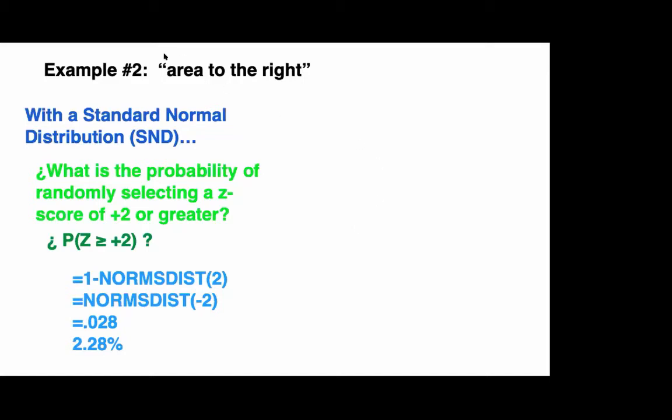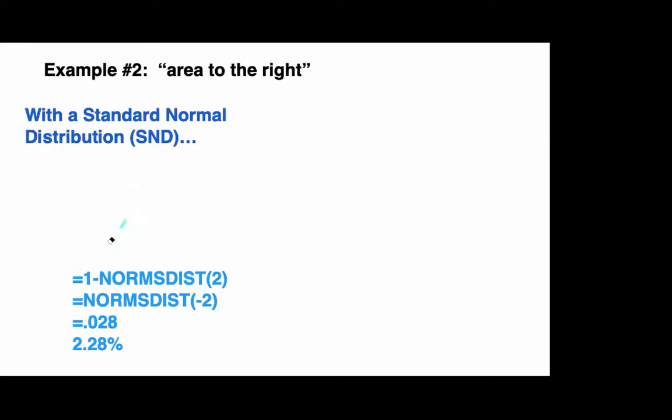To reiterate, norm s dist gives the probability of finding your z-score or less if you have a normal distribution. Alternatively, it is the area under the standard normal curve to the left of that value. Now we want to look at an example problem going in the other direction. That is, what do we do when we are looking for a percentile? Recall, a percentile is the value at or below you would expect to find a given percent of the data.